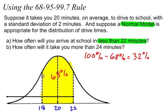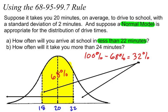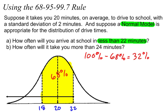If 68% is between these two dashed lines — one standard deviation above and below — that means half of this 32% is in the right tail, and the other half of the 32% is in the left tail. So 68% is in the middle, and 32% is split between the two tails. Half of 32 is 16, so 16% of my data is in this tail, and 16% of my data is in the other tail.